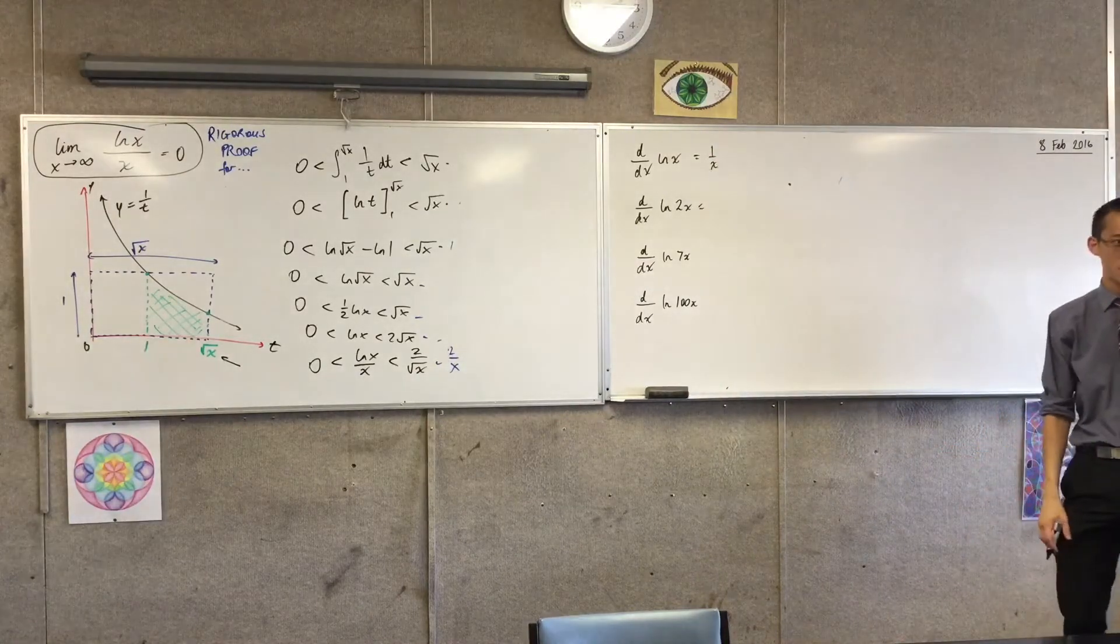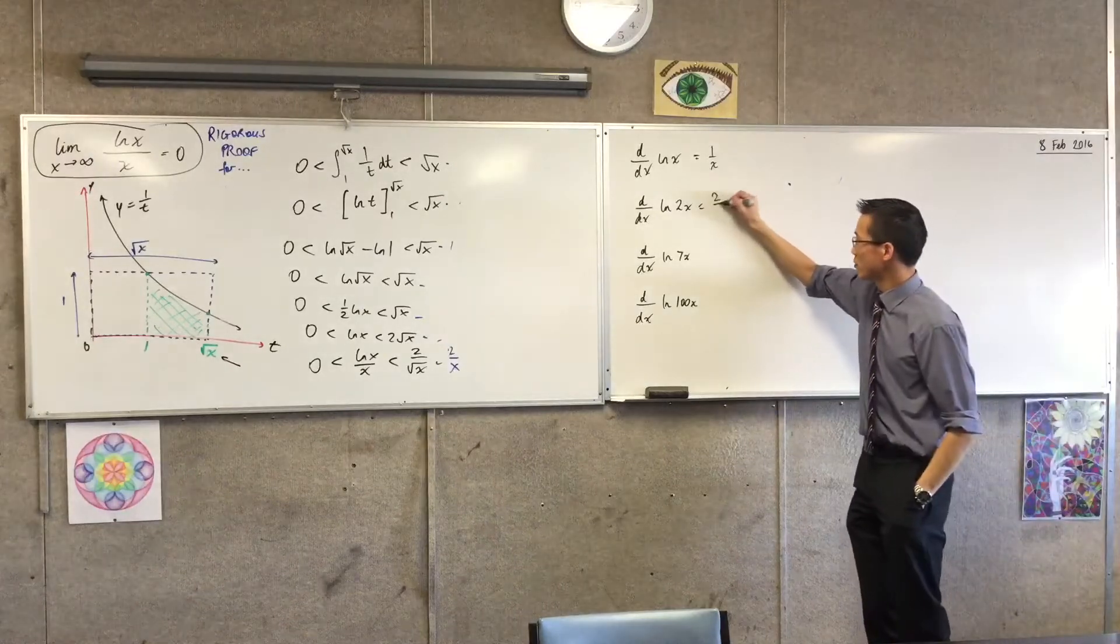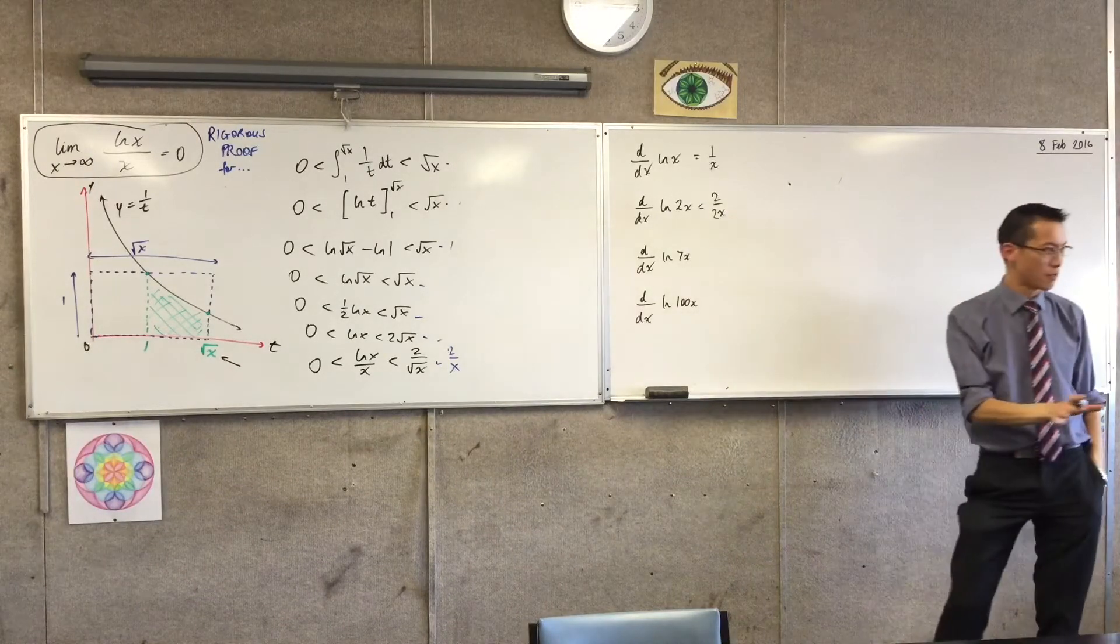What's the derivative of log 2x? 2 over 2x. You do chain rule and that gives you that. We're not going to boil this into 1 over x.